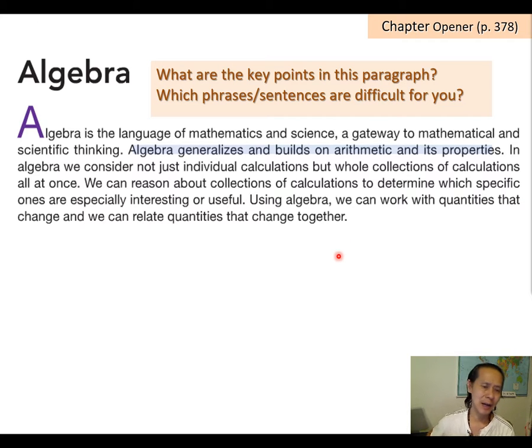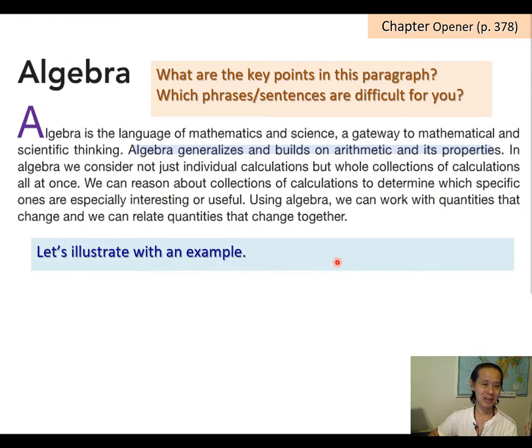So it says that algebra generalizes and builds on arithmetic and its properties. What does that mean? Maybe we could come up with some example to illustrate.